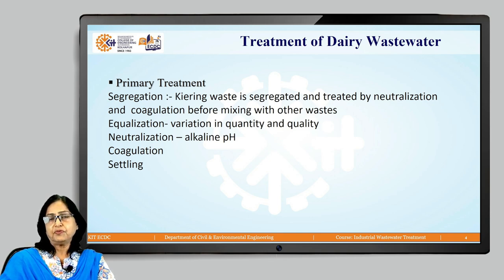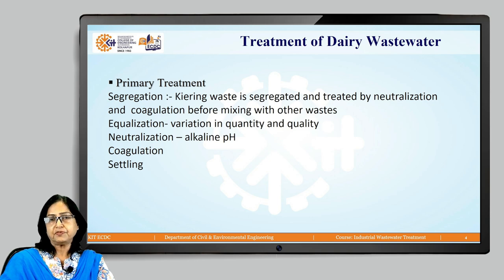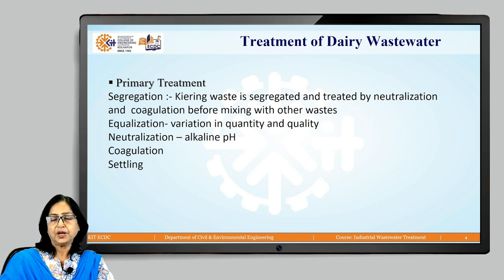The purpose of having neutralization after equalization is that once uniform characteristics are imparted, some sources of waste are neutral and some are alkaline. Once they are mixed, the chemical requirement for neutralization is less. From alkaline pH, it is neutralized to achieve a neutral pH of around 7.